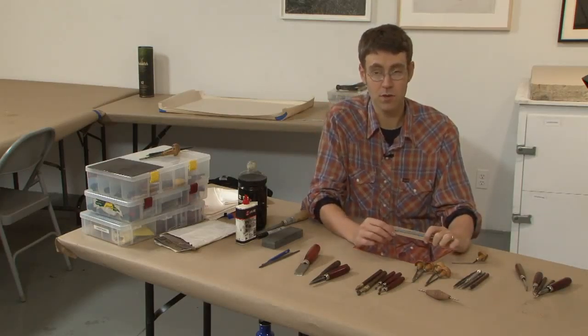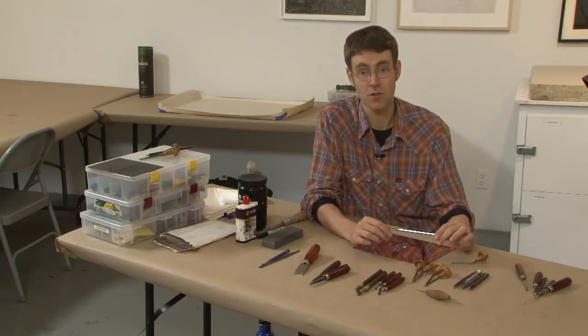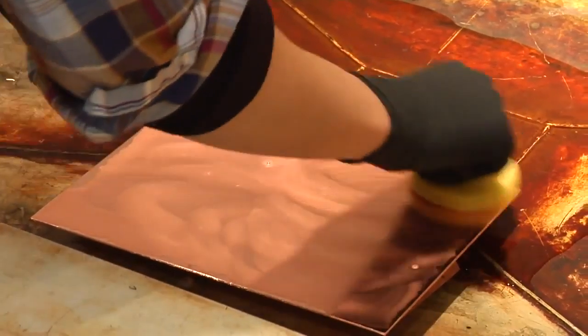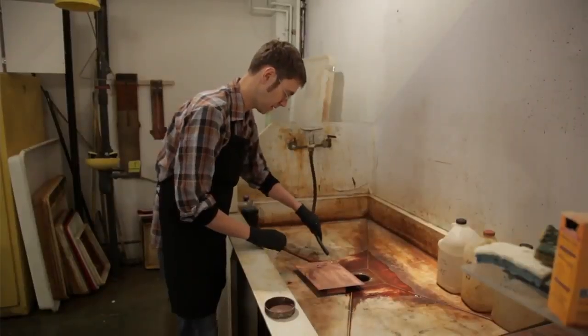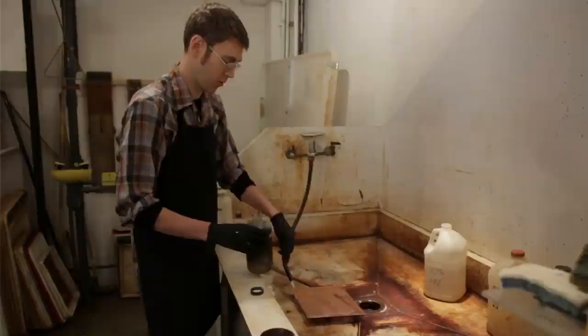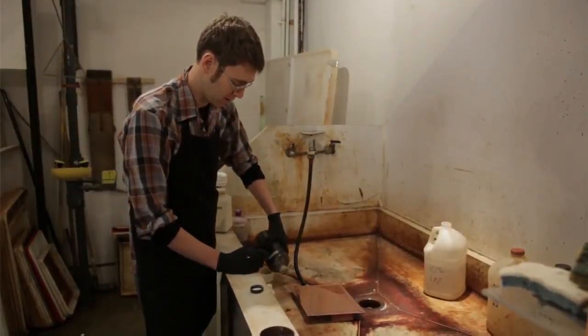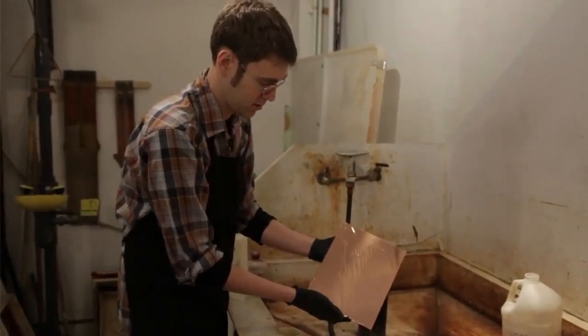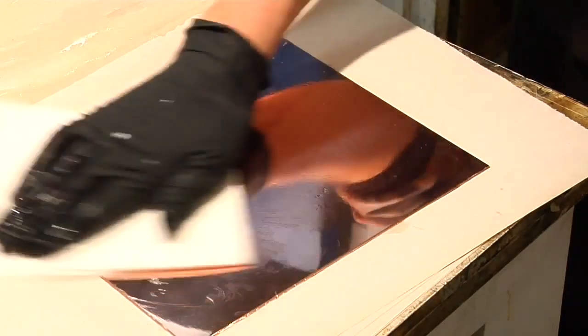Many of the same tools that we use for dry point are also used for etching. Etching involves several steps. The first step is to prepare the plate, which involves polishing and cleaning so that there are no marks or scratches on the surface that could interfere with the artist's drawing.